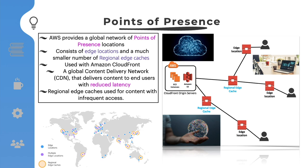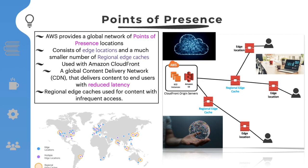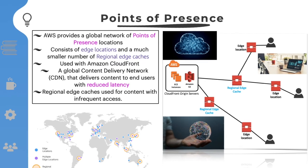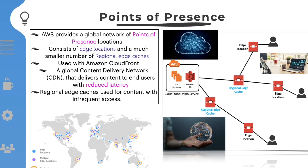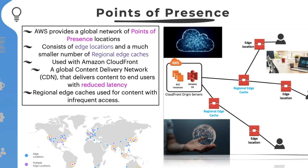Regional edge caches are used by default with Amazon CloudFront. They are used when content is not accessed frequently enough to remain in an edge location. Regional edge caches absorb this content and provide an alternative to fetching it from the origin server.